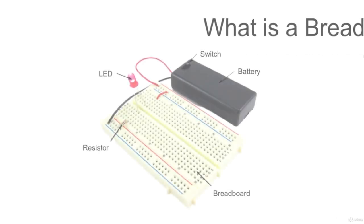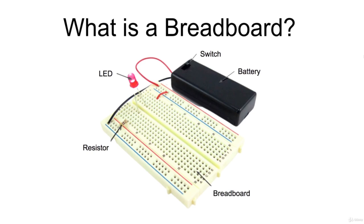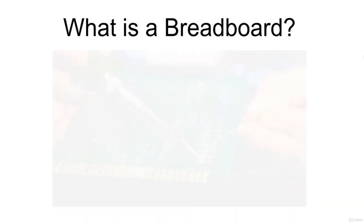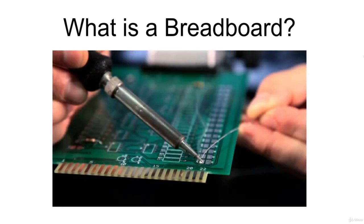These holes let you easily insert electronic components to prototype an electronic circuit, like one with a battery, a switch, a resistor, and an LED. The connections are not permanent, so it is easy to remove a component if you make a mistake or just start over and do a new project. These breadboards are called solderless breadboards because they do not require soldering to make connections between components.